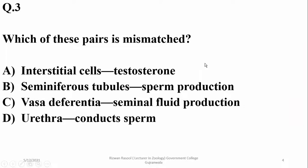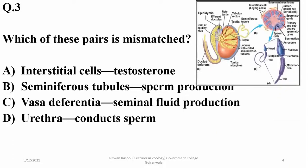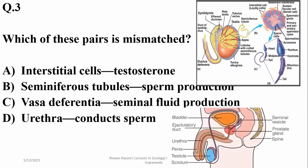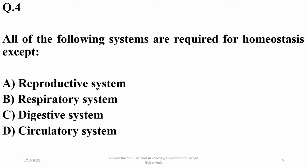Question number three: which of these pairs is mismatched? Interstitial cells secrete testosterone; seminiferous tubules are responsible for sperm production. However, vas deferens is not concerned with seminal fluid production — that is produced by seminal vesicles — but urethra conducts sperms. So option C is the wrong match.